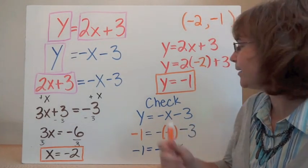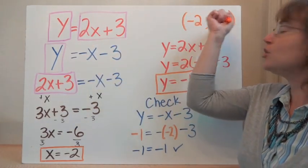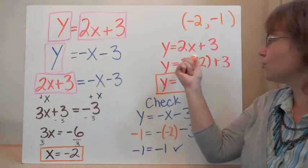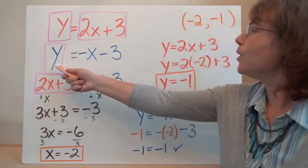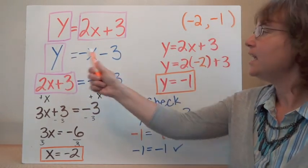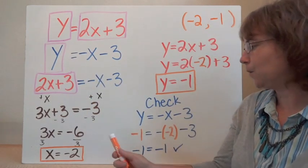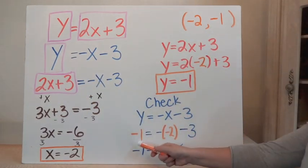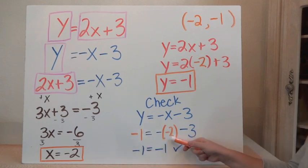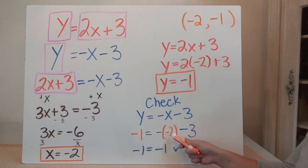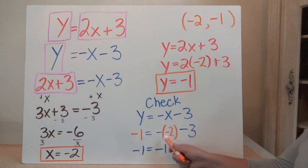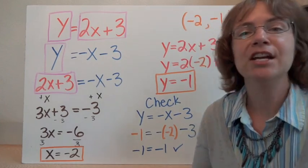Now just as a double check, we can plug it into the other equation and this should make the equation true there as well. We can plug negative 1 in for y and negative 2 in for x into y equals negative x minus 3. So negative 1 equals negative negative 2, which gives us 2, minus 3. So 2 minus 3 gives us negative 1, and that is equal to negative 1. So there we have a check — the solution is (negative 2, negative 1).